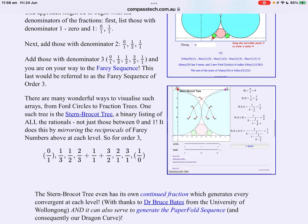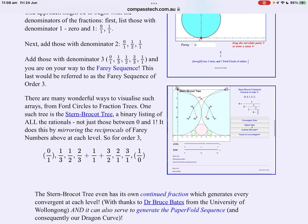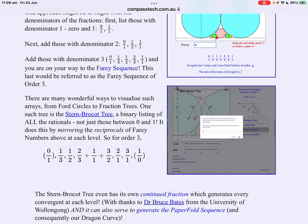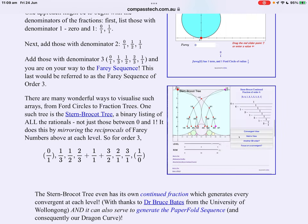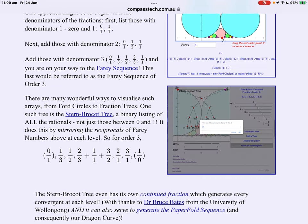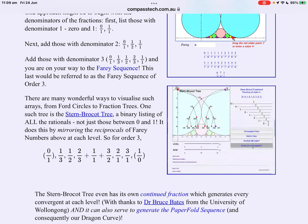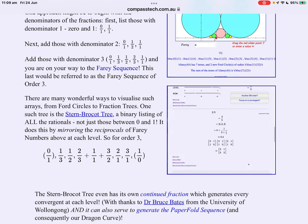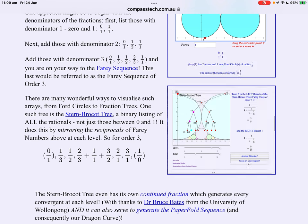As again you can see from the animation on the right, Ford circles lie behind but the actual structure of the tree lays out the fractions. So the Farey sequence lays out all fractions between zero and one. Stern-Brocot takes that, duplicates, mirrors those fractions and turns them upside down.